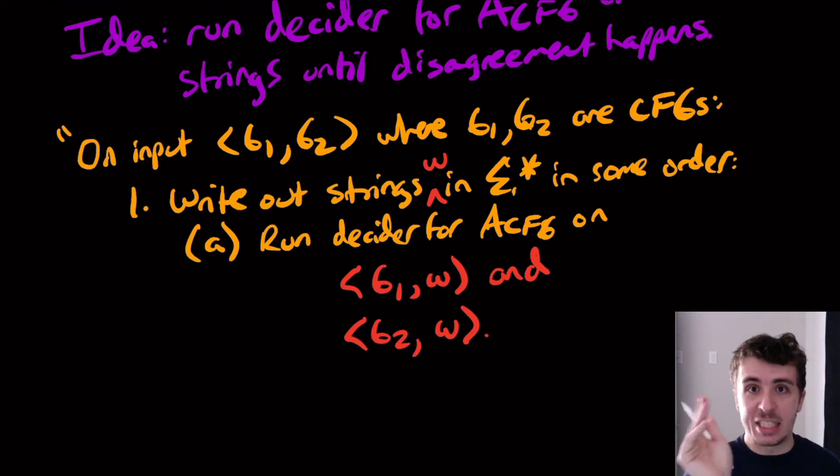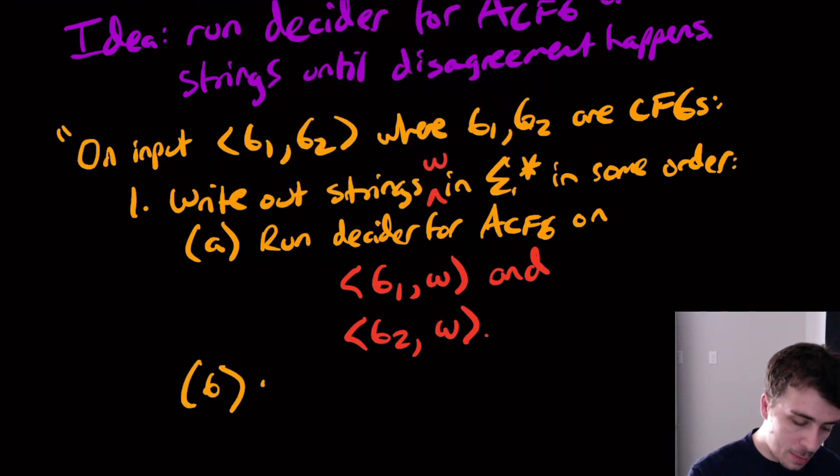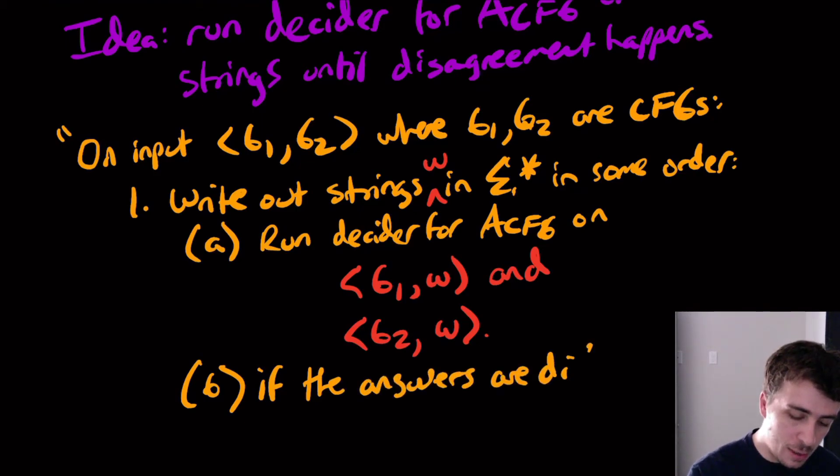Remember that the acceptance problem takes the machine or grammar, and then the input second. So we're going to run the first grammar and check if the first grammar can make that string, and the second grammar can make that string. So if the answers are different, then accept.